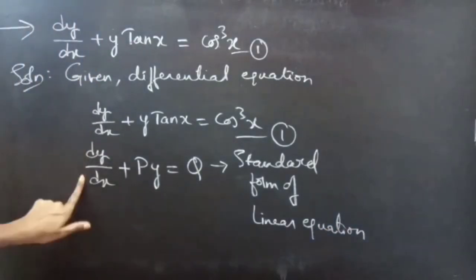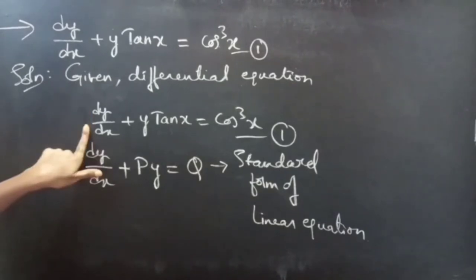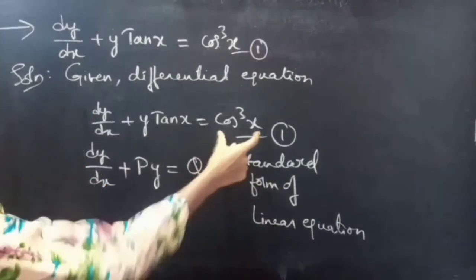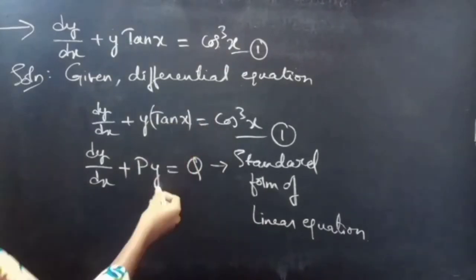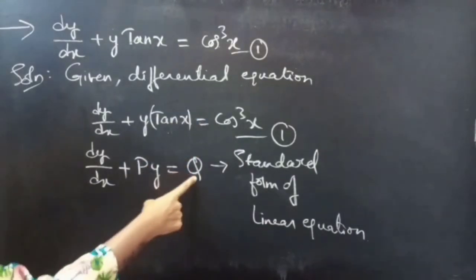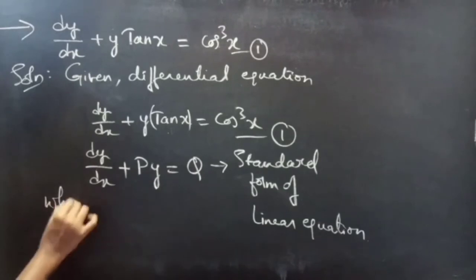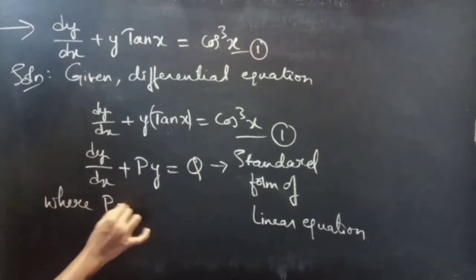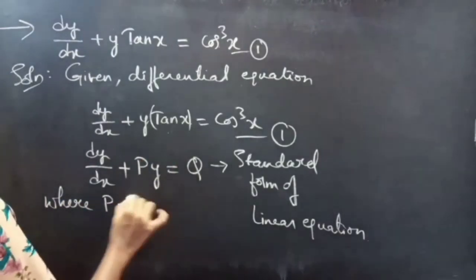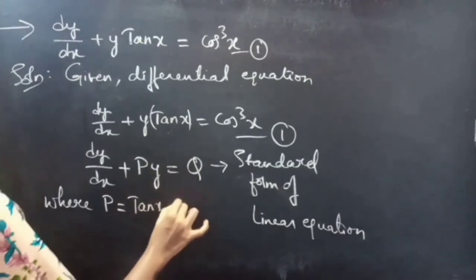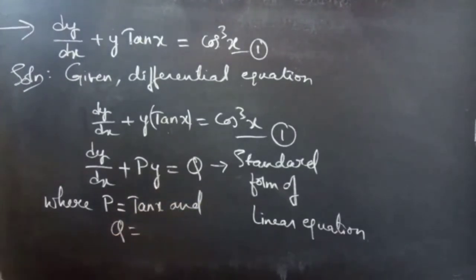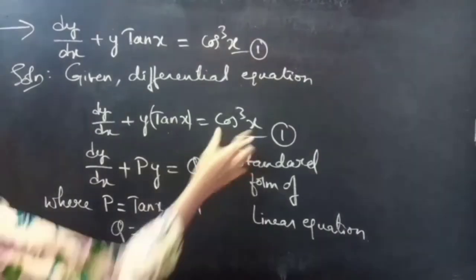So dy/dx has coefficient 1, and we have P·y equals Q. Comparing these two equations, we will get P and Q. Therefore, P equals tan x and Q equals cos³x.